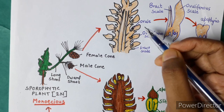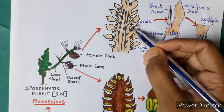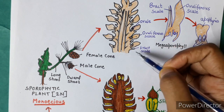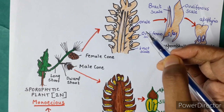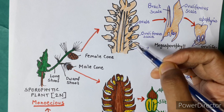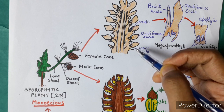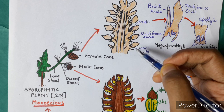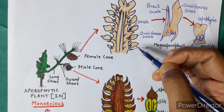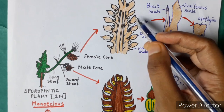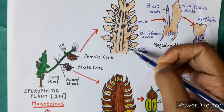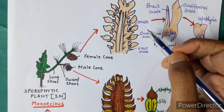On the megasporophyll you will see three structures: one is the ovule, another is the ovuliferous scale, and the third is the bract scale. This is specific to pinus — other gymnosperms have different cone structures. The cone of pinus has an ovuliferous scale on which you will see the ovule, the bract scale, and the ovule — three things in total.